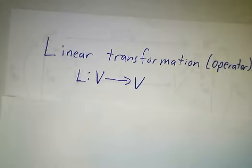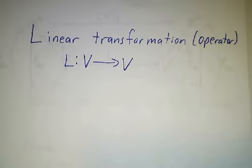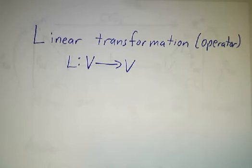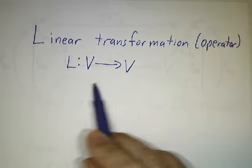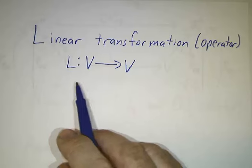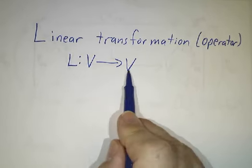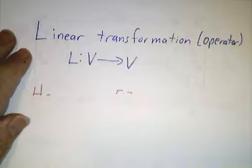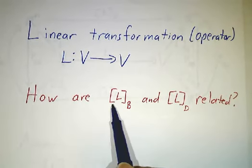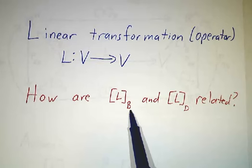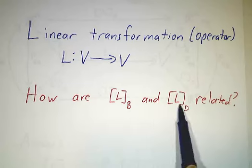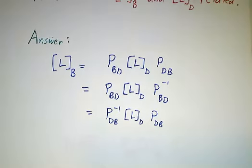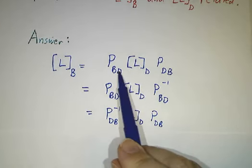Now let's talk about linear transformations and in particular about operators. For linear transformations in general, it's a bit more complicated because you have two different vector spaces and two sets of bases — that's all in the book. Let's just talk about operators, where you have one vector space, and we'd like to find the matrix of the linear transformation with respect to the b basis and with respect to the d basis, and how these two matrices are related.